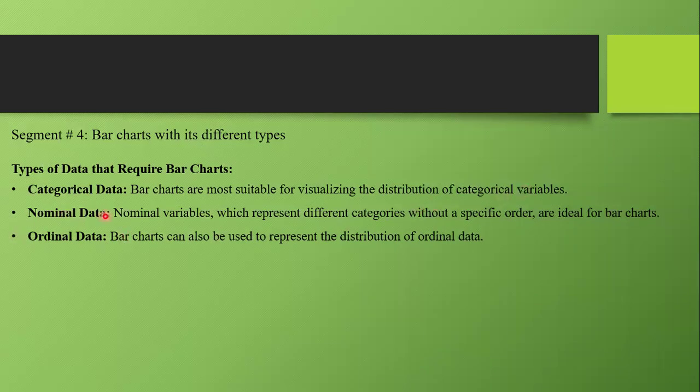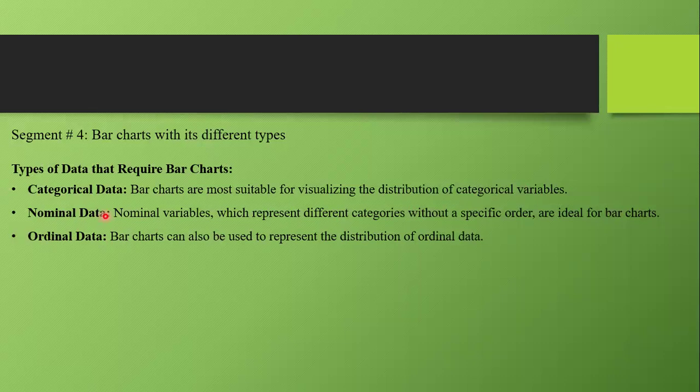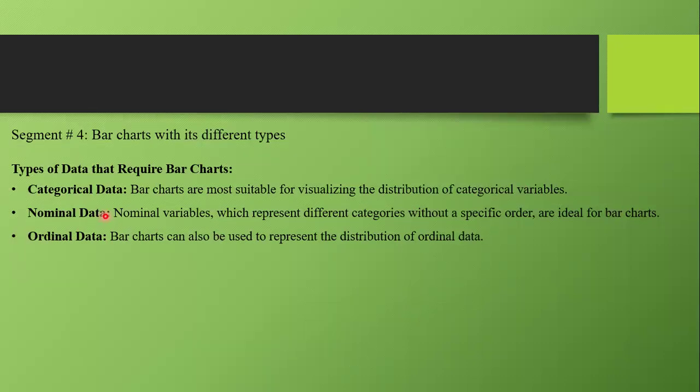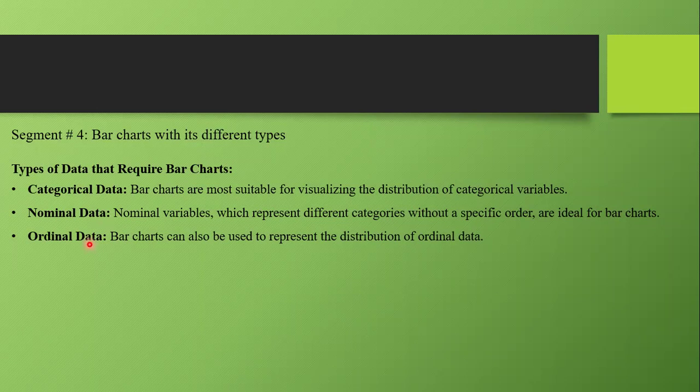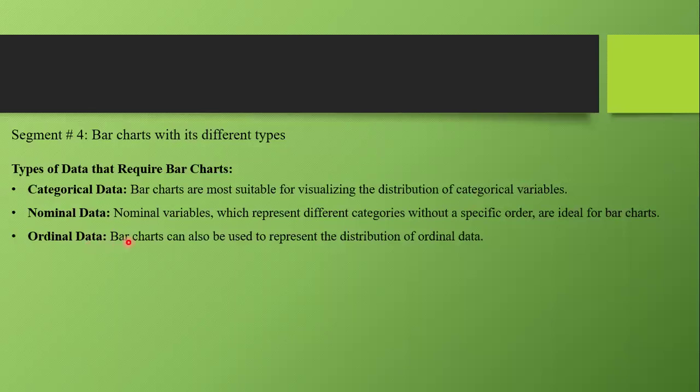For nominal data, like gender where we have one for male and zero for female, we can use bar charts. The third category is ordinal data. If our data shows some order, like qualification levels where higher qualified persons are ranked higher, bar charts can represent the distribution of ordinal data.